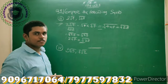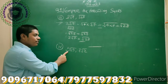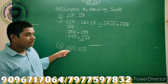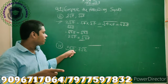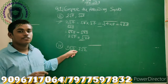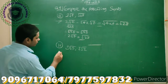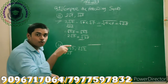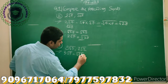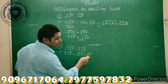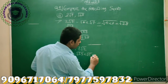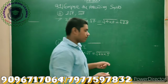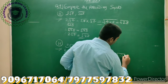Now question number 4: we have given the first surd as 5√5 and the second as 7√2. By looking at the coefficient, it appears the second surd is greater. But looking at the radicand, the first appears greater. So we will convert the coefficients into radicands. For 5√5: 5 can be written as √25, so we get √25 × √5. Both are square roots, so we combine: √(25×5) = √125.